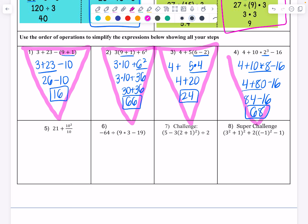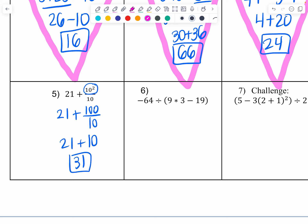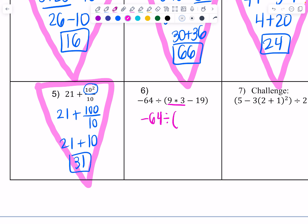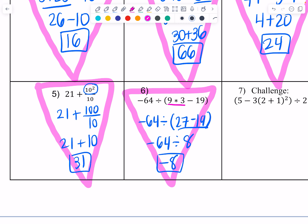The class attempted all these problems and as a group we decided if we agreed or disagreed. Starting with the division with an exponent: 100 divided by 10 is 10, giving 31. The next problem had more than one thing in the parentheses: negative 64 divided by 9 times 3 is 27. So negative 64 divided by 27 minus 19 became negative 64 divided by 8. Many groups remembered that a negative divided by a positive gives a negative — that made me very happy!